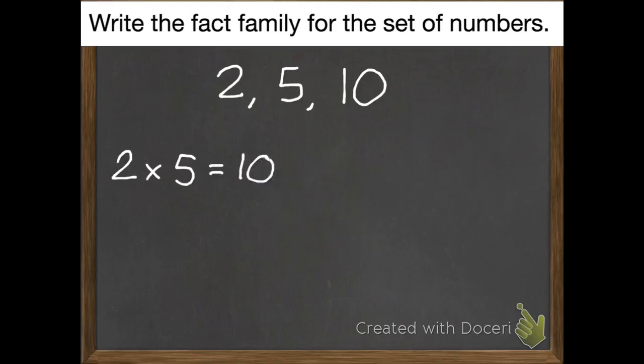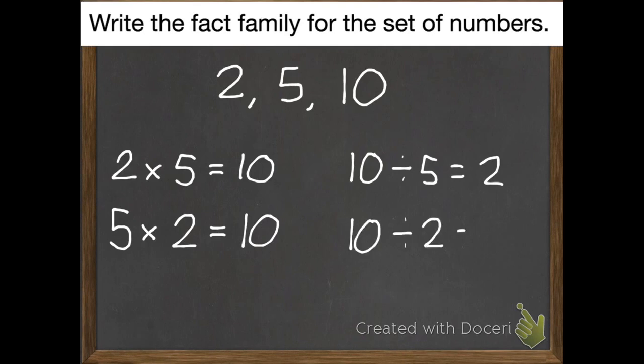Okay, you should have 2 times 5 equals 10, 5 times 2 equals 10, 10 divided by 5 equals 2, and 10 divided by 2 equals 5.